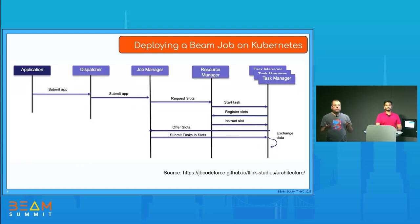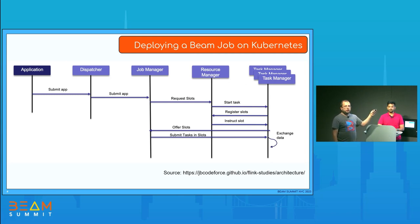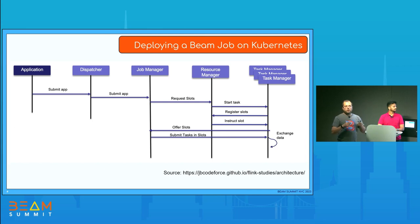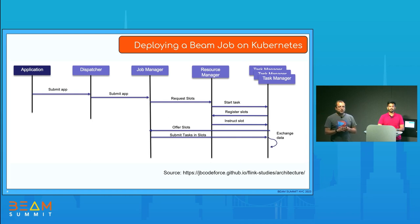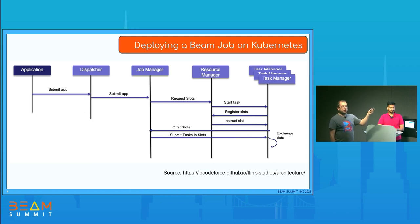How Flink works: when we bundle the Beam job and Flink runtime together, and if you set the entry point as your Java application, it can automatically submit your job to the internal dispatcher. Your Docker image already has the job manager — it brings up the job manager, and the job manager uses active resources to get the workers. Then your job starts working.